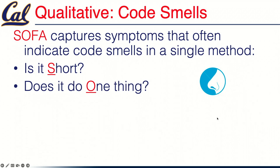Does the method do only one thing? A method is more likely to be too long if it tries to do multiple things. But there's another reason it's helpful for a method to do only one thing: you can write tests for it. If the method does multiple things, in some sense you're writing multiple tests and you should ask yourself why this isn't multiple methods.